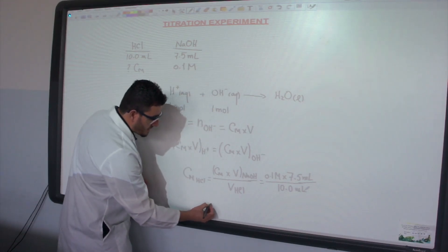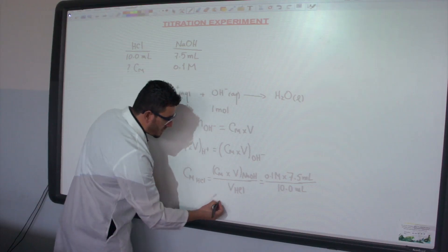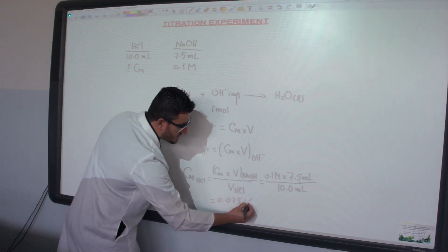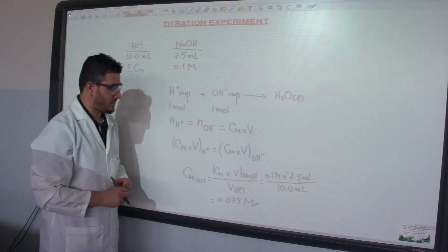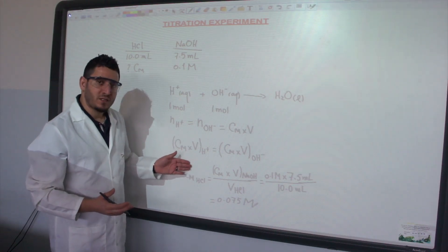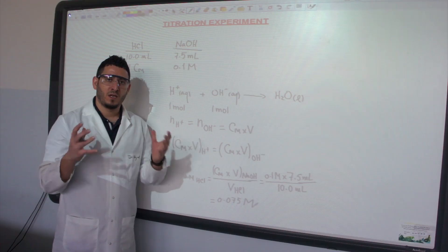So the molarity equals 0.075 mol/L. I have now determined the molarity of the HCl solution by titration. Now that we have seen the calculation and the experimental procedure, I hope this video will be very helpful to you. See you next time!